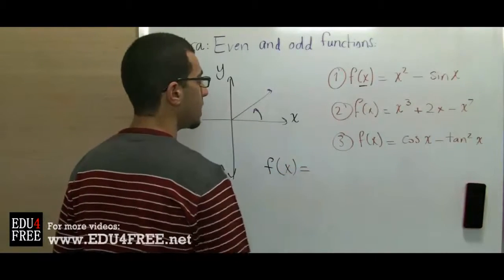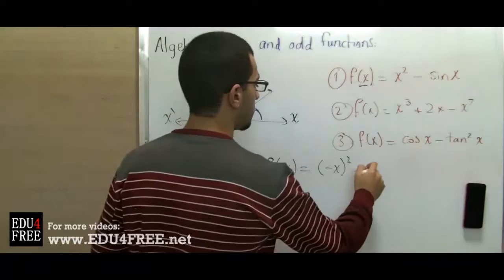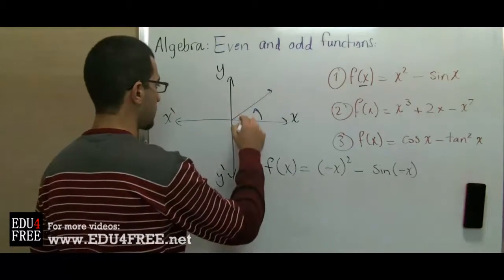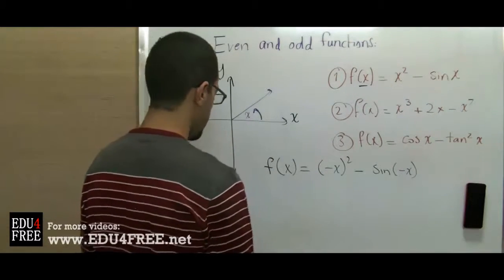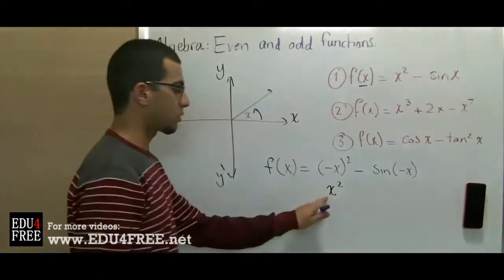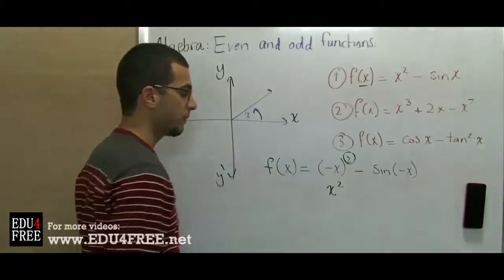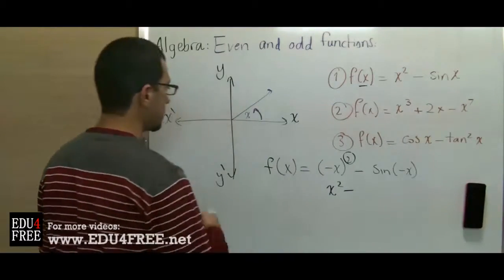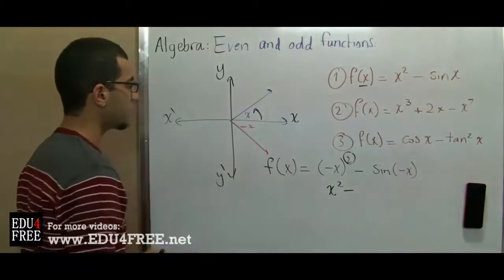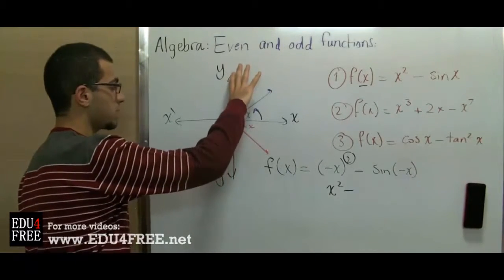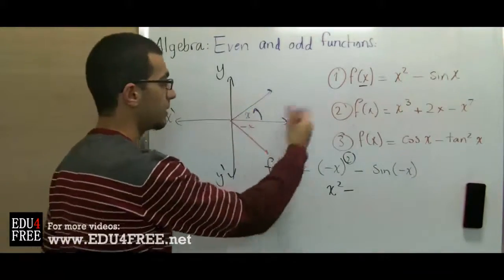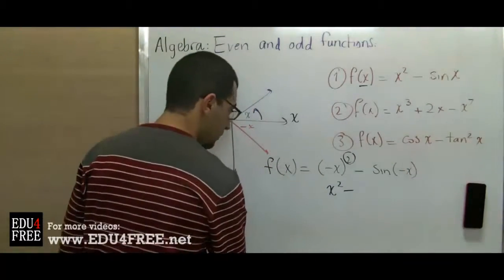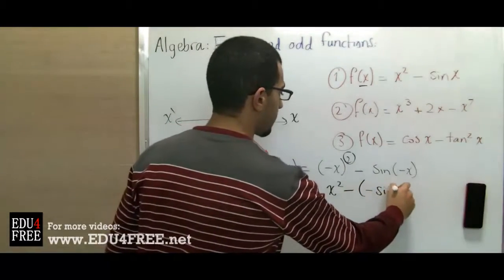We will have (-x)² - sin(-x). The square of negative x is simply x² because it is raised to an even number. Now, what does sin(-x) equal? If this is x and this is -x, the sine is at the positive part for x and at the negative part for -x. So sin(-x) = -sin(x).